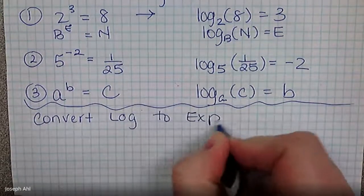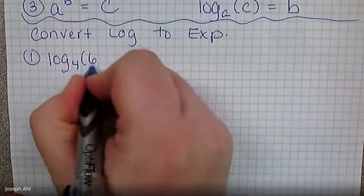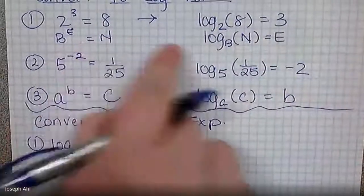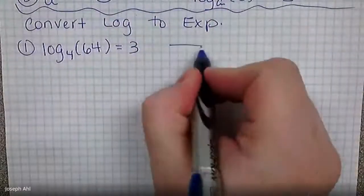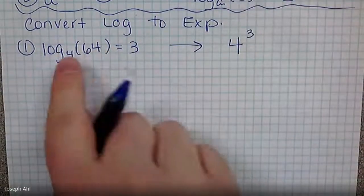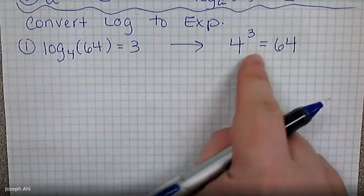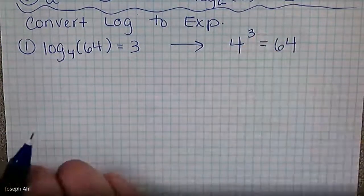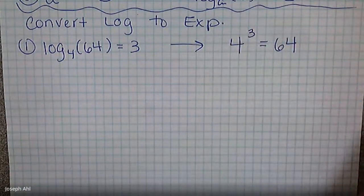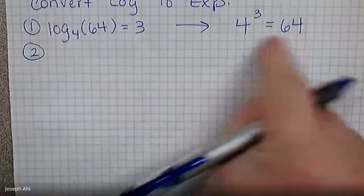Now let's go the other direction — convert from log to exponential form. If I start with log base four of 64 equals three, I'm in BENNY form and want to get to BEN. The base of the log becomes the base of the exponential: four to the third equals 64. The nice thing about converting to exponential form is you can check whether it makes sense. Is four cubed 64? Yes. If you had accidentally written three to the fourth, that's 81, which is incorrect.